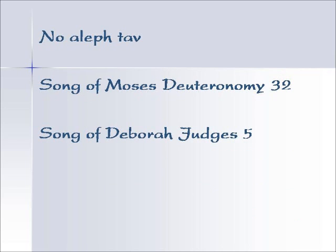There's one more thing I noticed while making this study: there are two places where there is not a single Aleph Tav at all. In the Song of Moses in Deuteronomy 32 and in the Song of Deborah in Judges 5, there is not one Aleph Tav direct object marker — not one with a Vav or a Mem, none attached to personal pronouns or possessive pronouns. Not a single one. I have no idea what this means, but maybe you have an idea, and if you do I would be very happy to hear your thoughts.